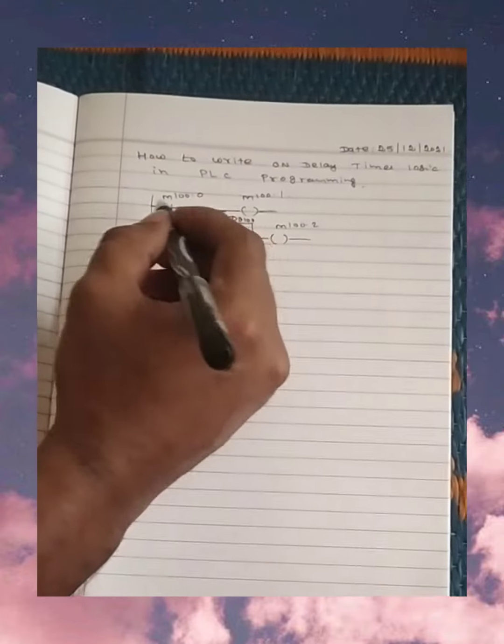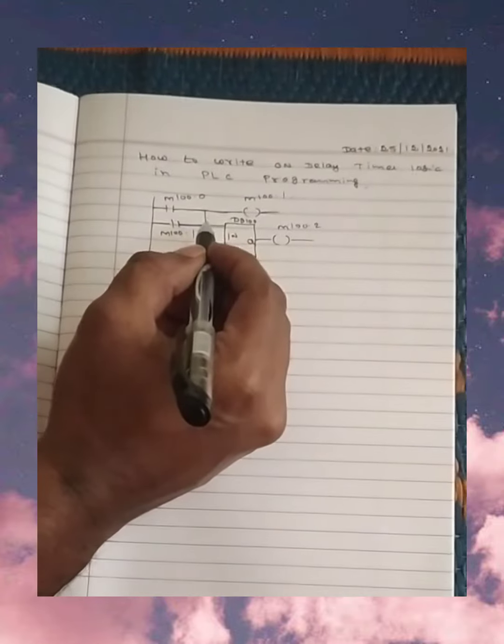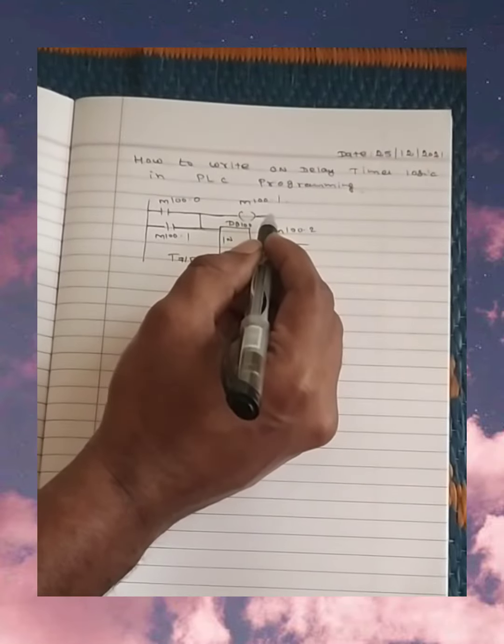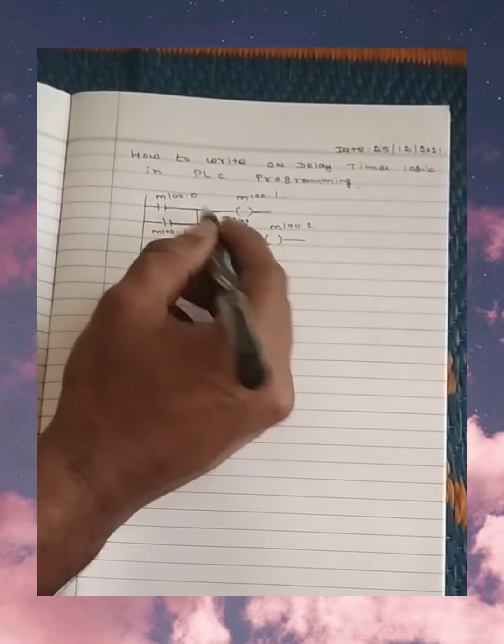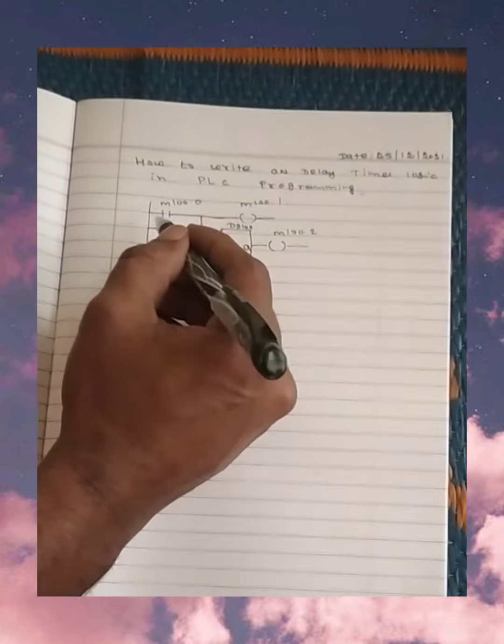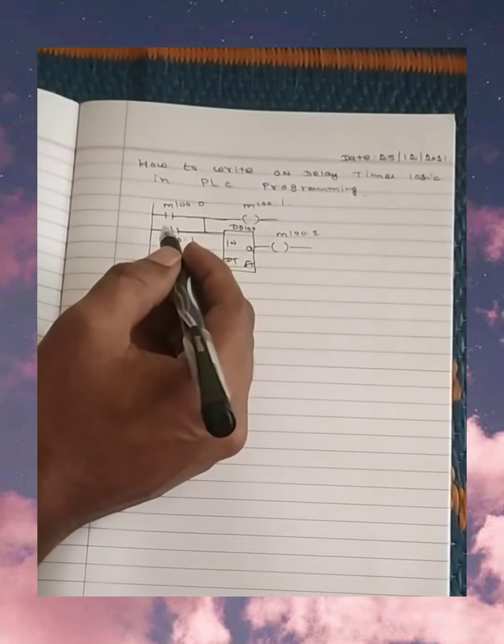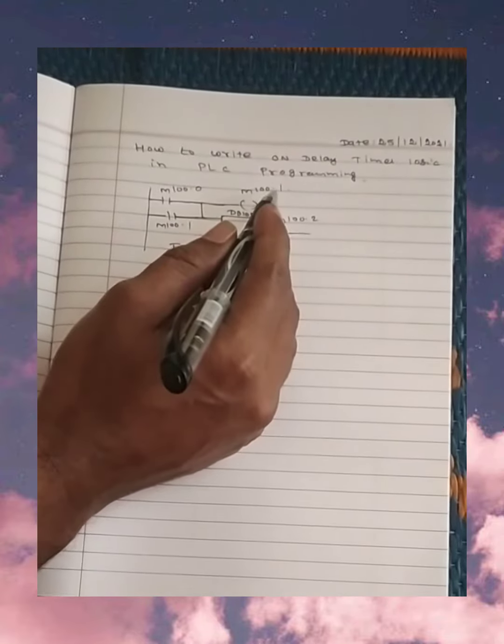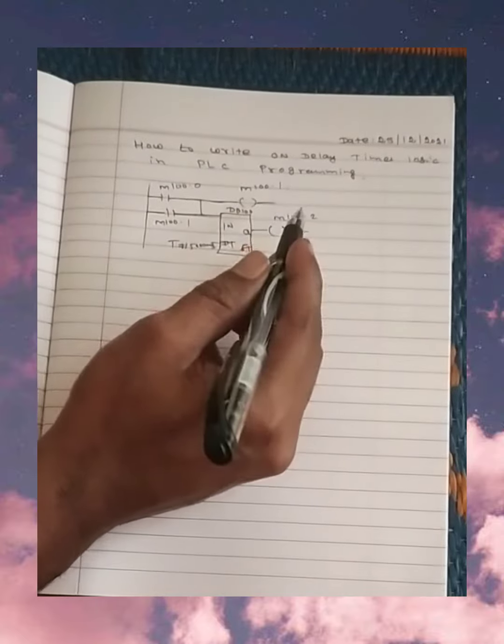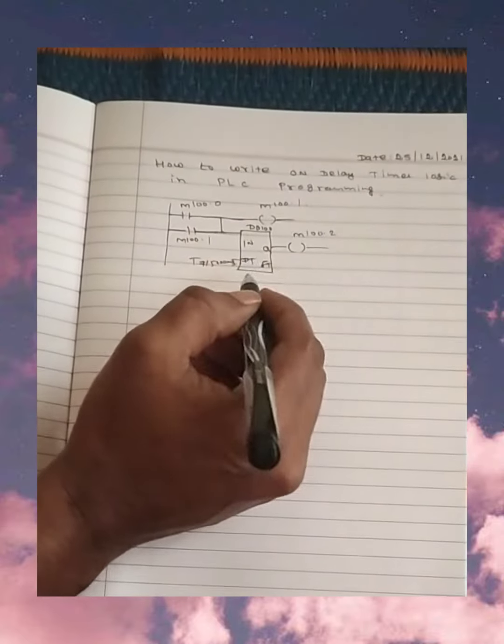So when my push button is on, my M100.1 will be on. The same coil I am using for the latch, so that even I take out my hand from the push button, through M100.1, my M100.1 coil will be on. The same time, the timer is also start running.